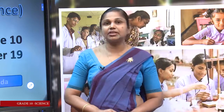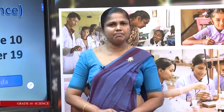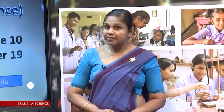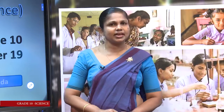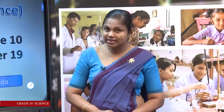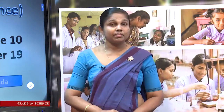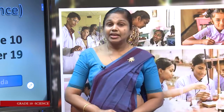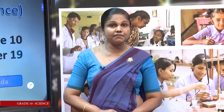You know what instruments are used to measure current flow and potential difference. Current flow is measured by the ammeter and potential difference is measured by the voltmeter. When the ammeter is connected to a circuit, it is connected in series. When the voltmeter is connected to a circuit, it is connected in parallel. Then we learnt the relationship between the current flow through a conductor and the potential difference across it.